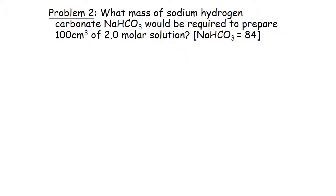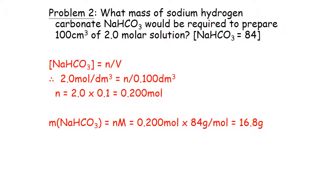Question 2: what mass of sodium hydrogen carbonate NaHCO₃ is required to prepare 100 cm³ of a 2 mol/dm³ solution? From concentration = n/V: n = 2 × 0.1 dm³ = 0.2 moles. Mass = moles × molar mass = 0.2 × 84 = 16.8 grams.